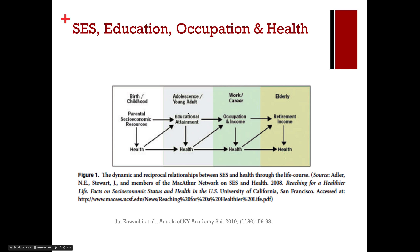Each of those things — your parental resources, your educational attainment, your occupation and income, and your retirement income — all have a direct impact on your health. If you follow the arrows, your health as a child has an impact on your educational attainment. Think of it this way: if you're a young child who has uncontrolled asthma, you're more likely to miss school, and that's going to have an impact on your educational attainment. Health problems during childhood have an impact on health during adolescence and young adulthood, as an adult, and into your older years.